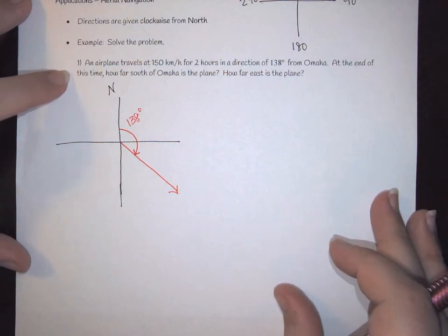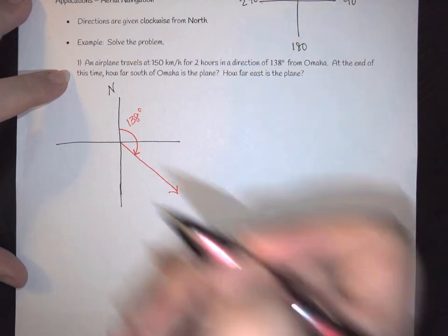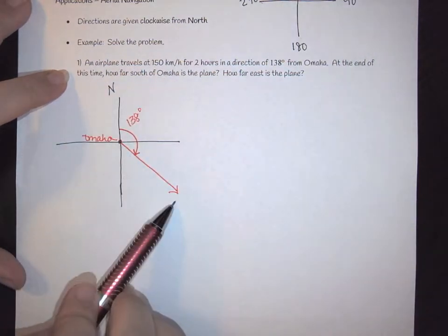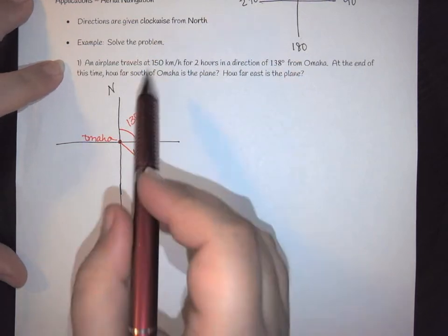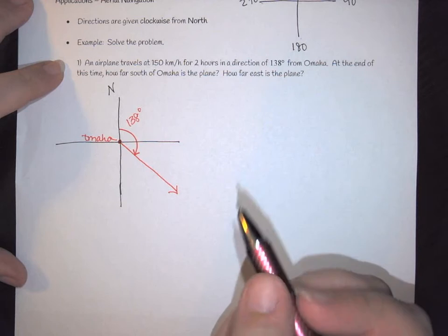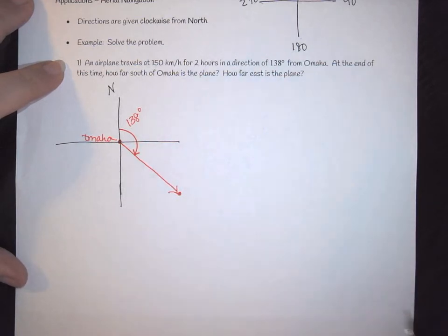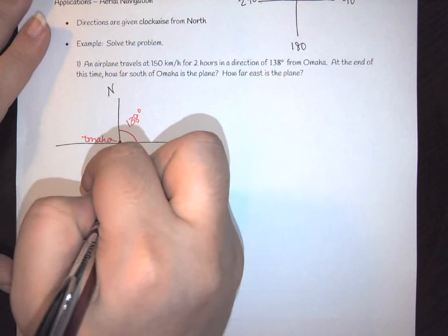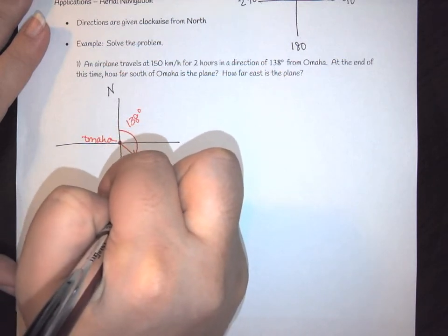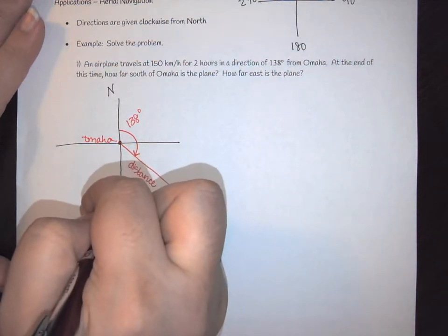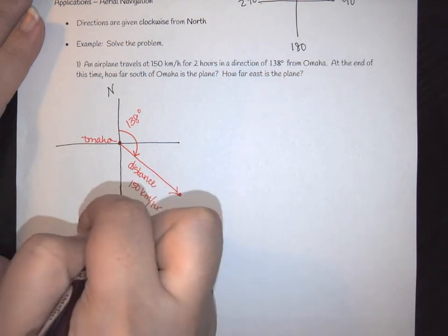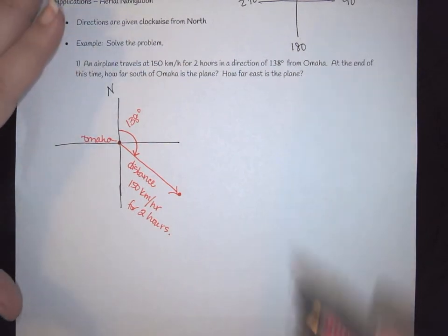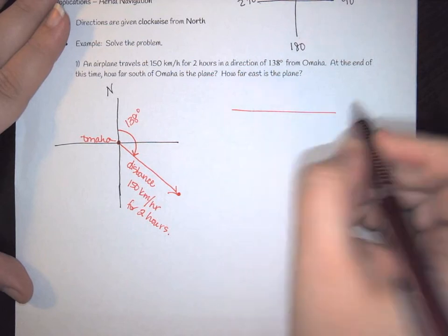Now it says at the end of this time, how far south of Omaha is the plane? So what this is telling us is right here, this is Omaha, and we are traveling for 150 kilometers per hour for two hours, and we want to know where we ended up. So first and foremost we've kind of got this triangle here, so we've got that this is our distance, and we know that we are going 150 kilometers per hour for two hours.